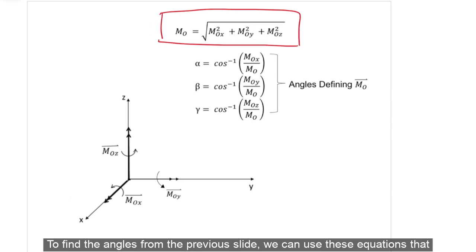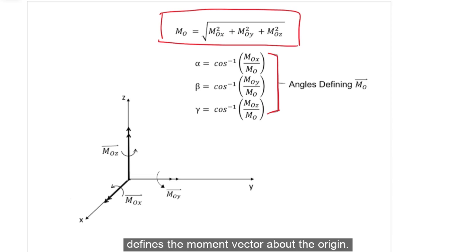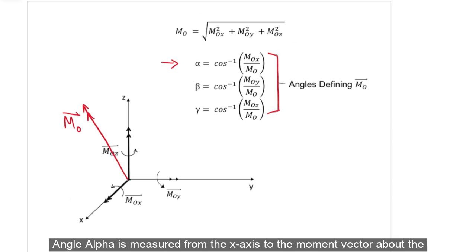To find the angles from the previous slide, we can use these equations that define the moment vector about the origin. Angle alpha is measured from the x-axis to the moment vector about the origin.